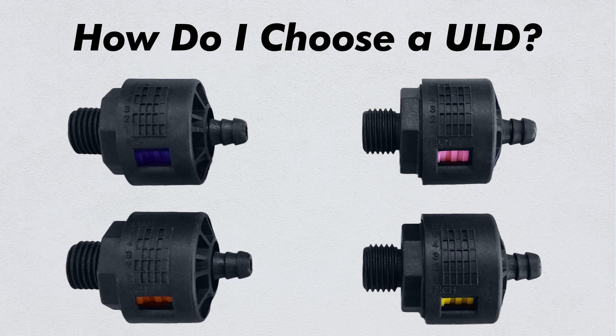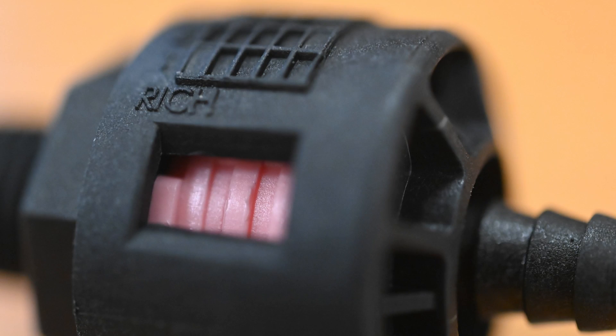Each ULD has different colored discs in a unique formation that allows you to determine the dilution rate. On the side of the cylinder, there is a small window where you can see the discs inside. That first allows you to identify the color.